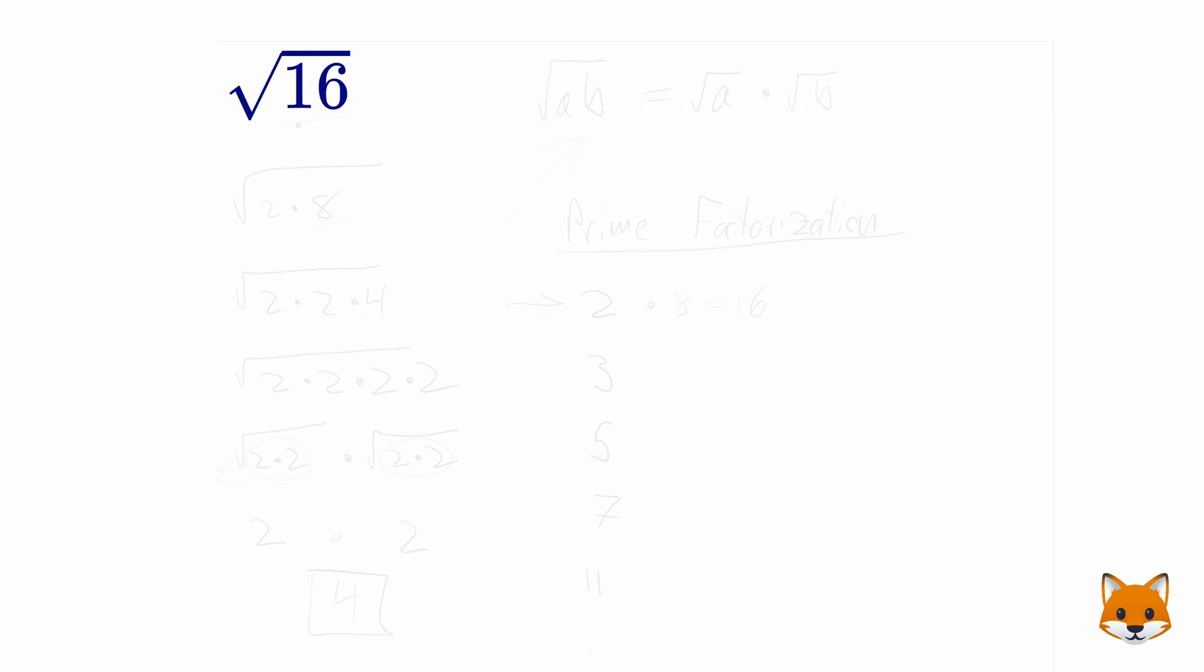All right, here we're trying to simplify the square root of 16. Now there's one rule here that's important to know, and that is if you have the square root of a times b, that can be rewritten as the square root of a times the square root of b.